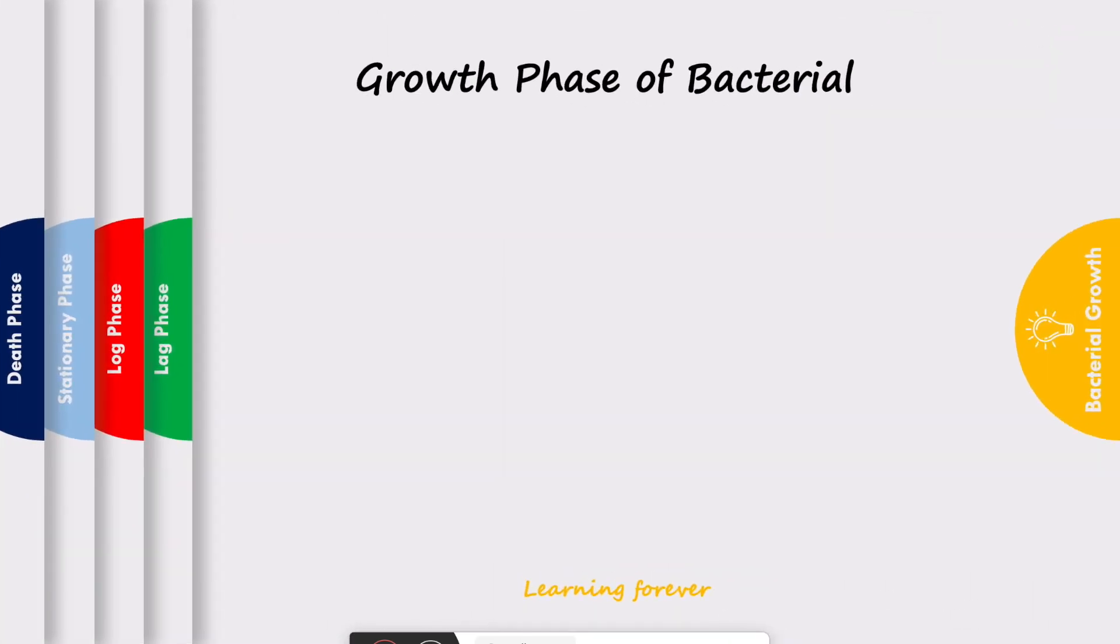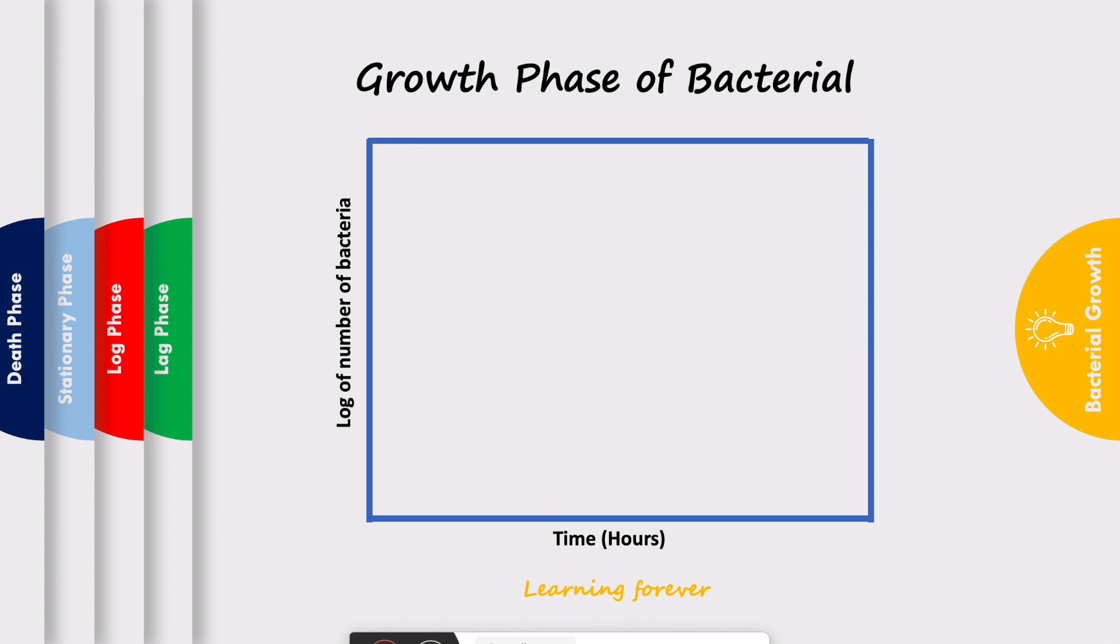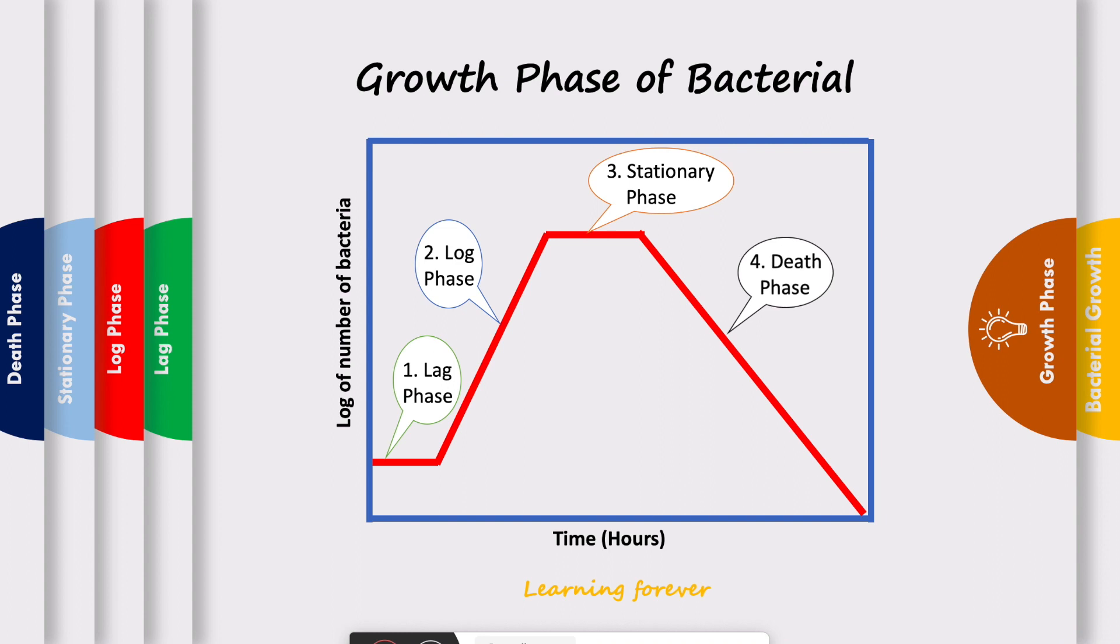Now we will see different growth phases of bacteria. When we plot log of number of bacteria against time, it gives us a curve which consists of four phases: phase one lag phase, phase two log phase, phase three stationary phase, and phase four death phase. These four phases of the graph of log of number of bacteria against time is called the growth phase of bacteria.